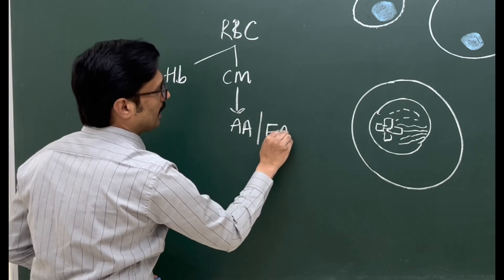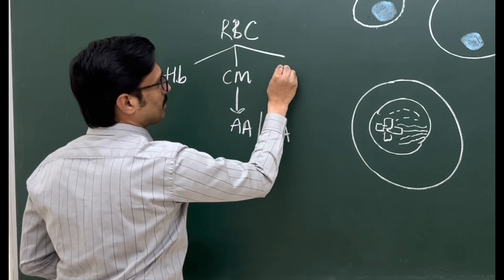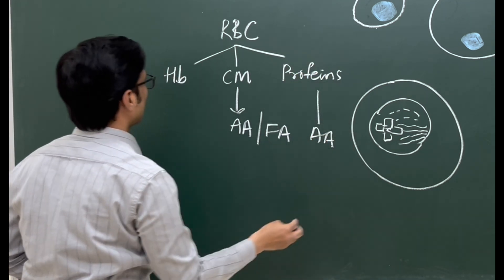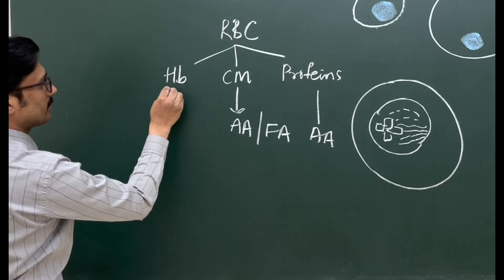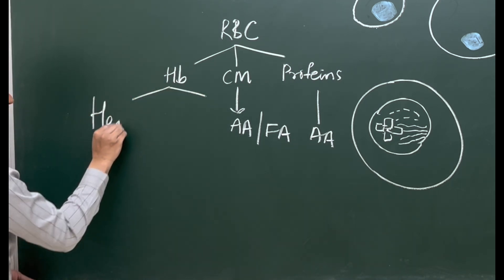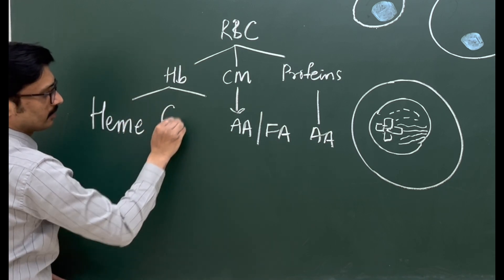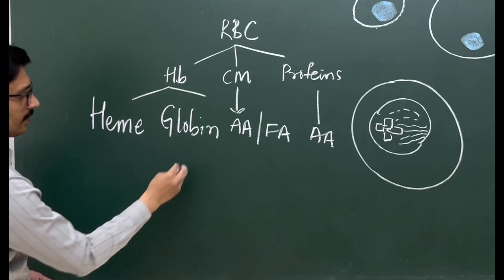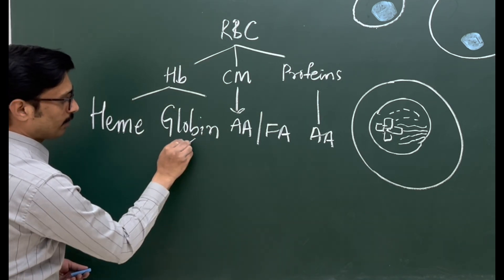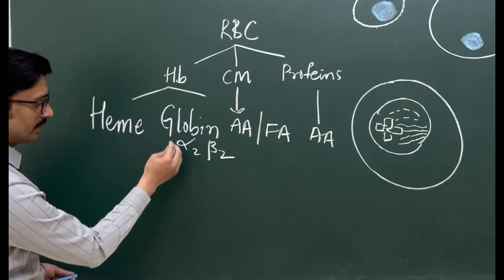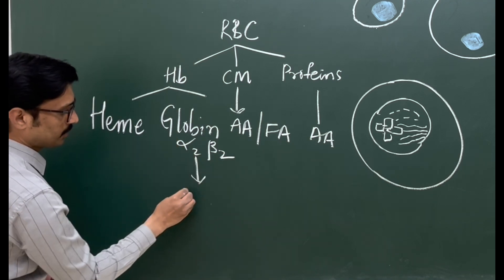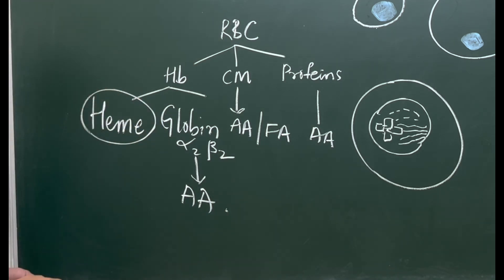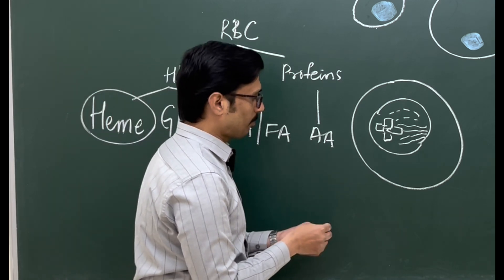This hemoglobin is split into heme and globin. The globin — the alpha-2 beta-2 polypeptides of hemoglobin — is broken down to amino acids. This heme, formed by breakdown of hemoglobin, is a tetrapyrrole ring: four porphyrin rings with iron in the center.